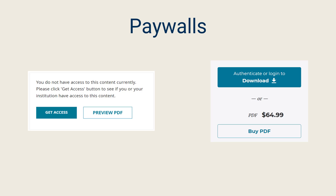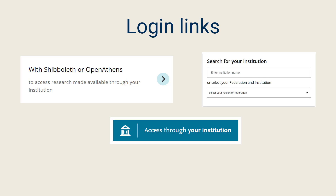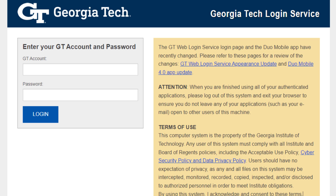At some point in your research process, you may come across an article or book on a publisher's website that looks like it's not available at Georgia Tech. For example, you might hit a paywall with an option to purchase access for a fee, or you might see an option to log into the resource. But if what you see isn't the Georgia Tech single sign-on screen, it may be unclear what to do to sign in.